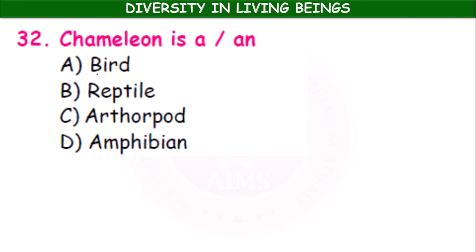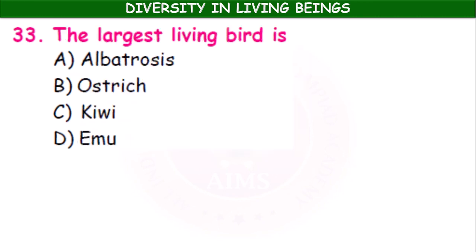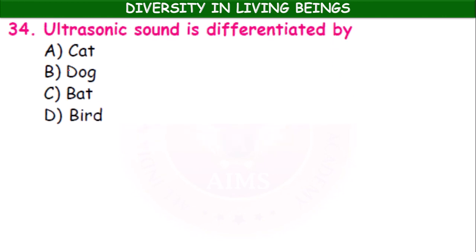The largest living bird is — albatross, ostrich, kiwi, or emu? Ostrich is the largest living bird. Ultrasonic sound is differentiated by — cat, dog, bat, or bird? The answer is bat.